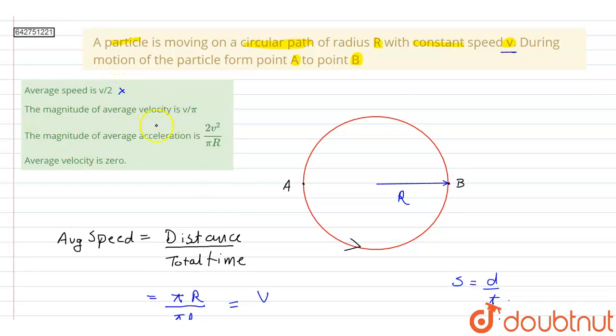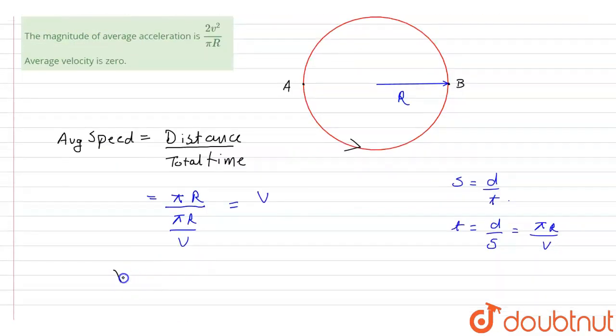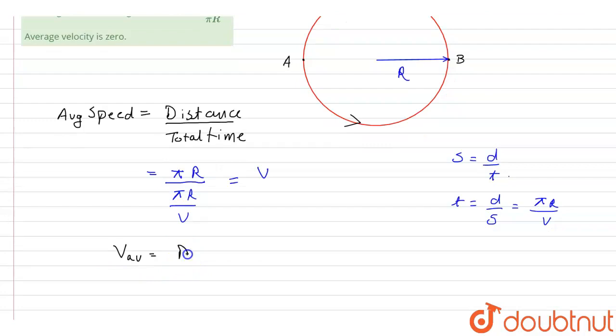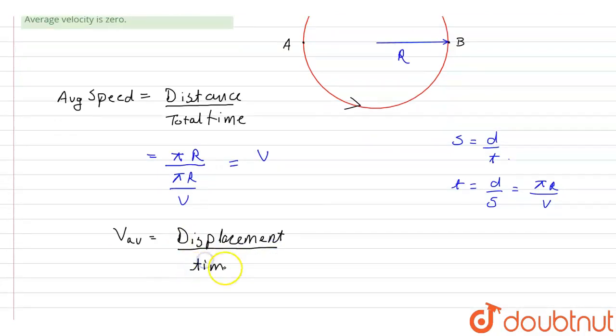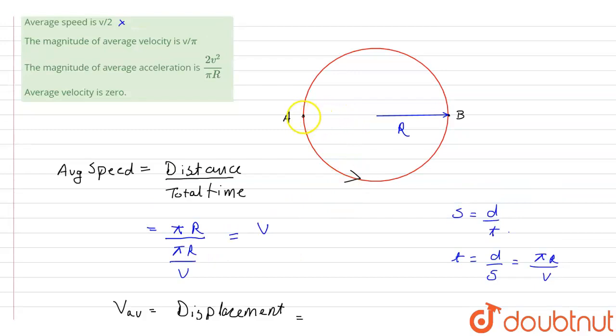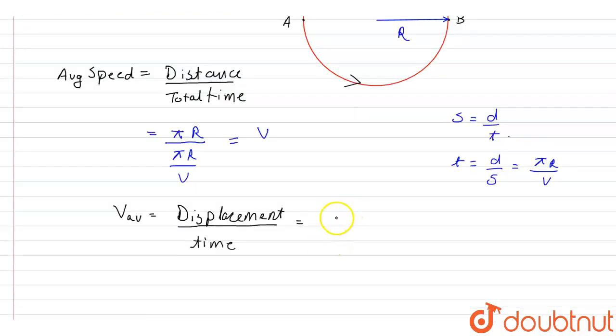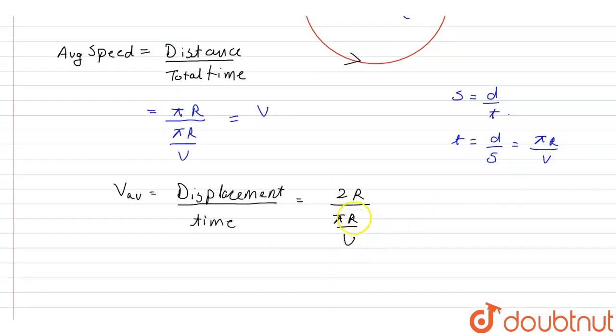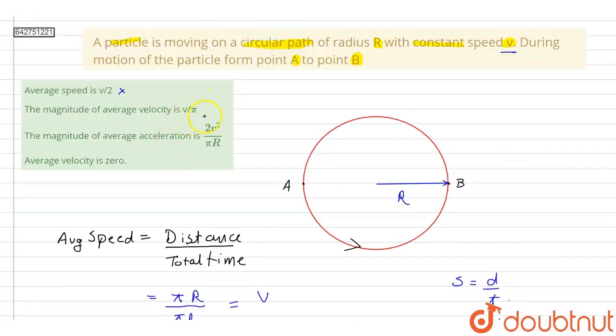Option 2 is the magnitude of average velocity is V by pi. So let us calculate average velocity. Now average velocity is given as displacement divided by time. Displacement will be equal to distance between A and B and that is 2R, the diameter of the circle, 2R divided by time is again pi R by V. So this will get cancelled. Therefore the displacement will be equal to 2V upon pi. But in the option it is V by pi, so this statement will also not be true. And also option D, average velocity is zero, this will also be incorrect.